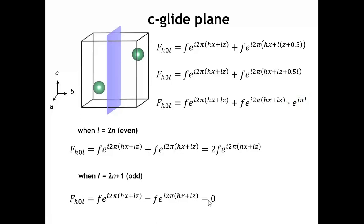That is exactly what is predicted for a C glide perpendicular to the b axis — we only see peaks when l is an even number. So you can go back and look at any of those glide planes or screw axes, do these kinds of calculations, and you'll see the origins of those reflection conditions.